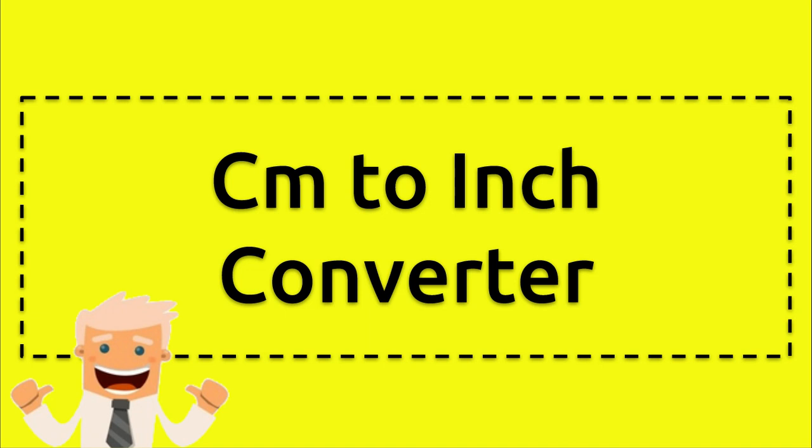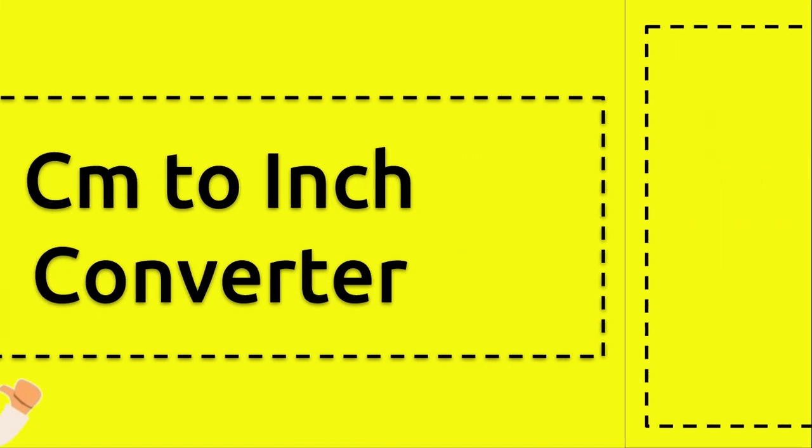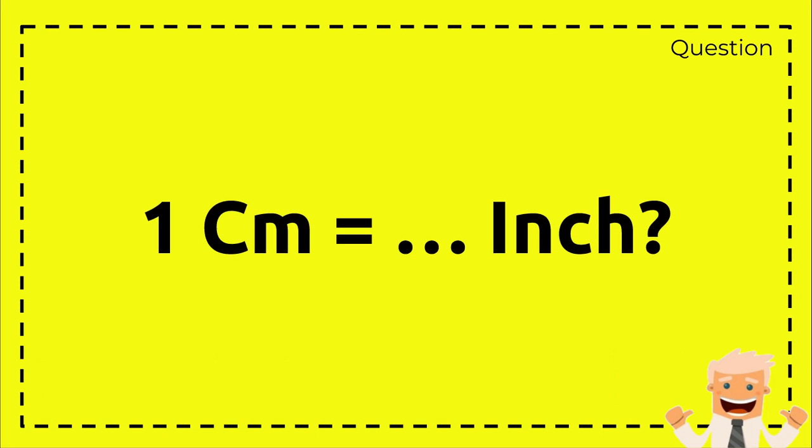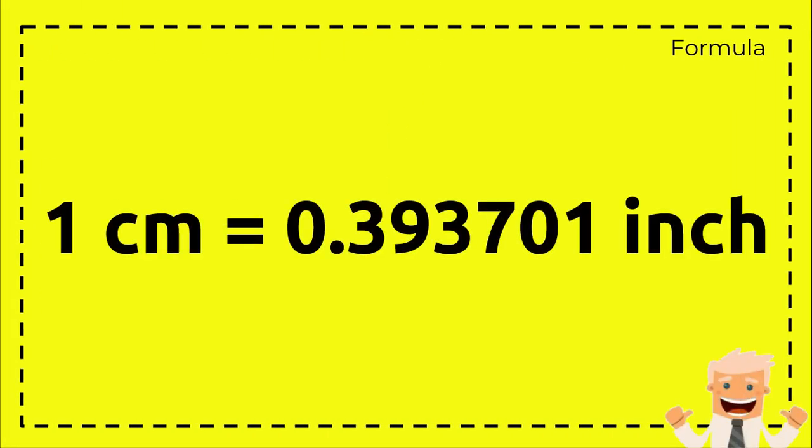All right, first this is the question: one centimeter equals how many inches? And then this is a formula you need to know: one centimeter equals 0.393701 inch. That's the formula.